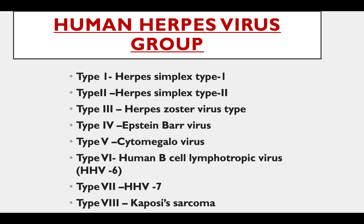Human Herpes Virus Group: Type 1 — Herpes Simplex Type 1; Type 2 — Herpes Simplex Type 2; Type 3 — Herpes Zoster Virus; Type 4 — Epstein-Barr Virus; Type 5 — Cytomegalovirus.